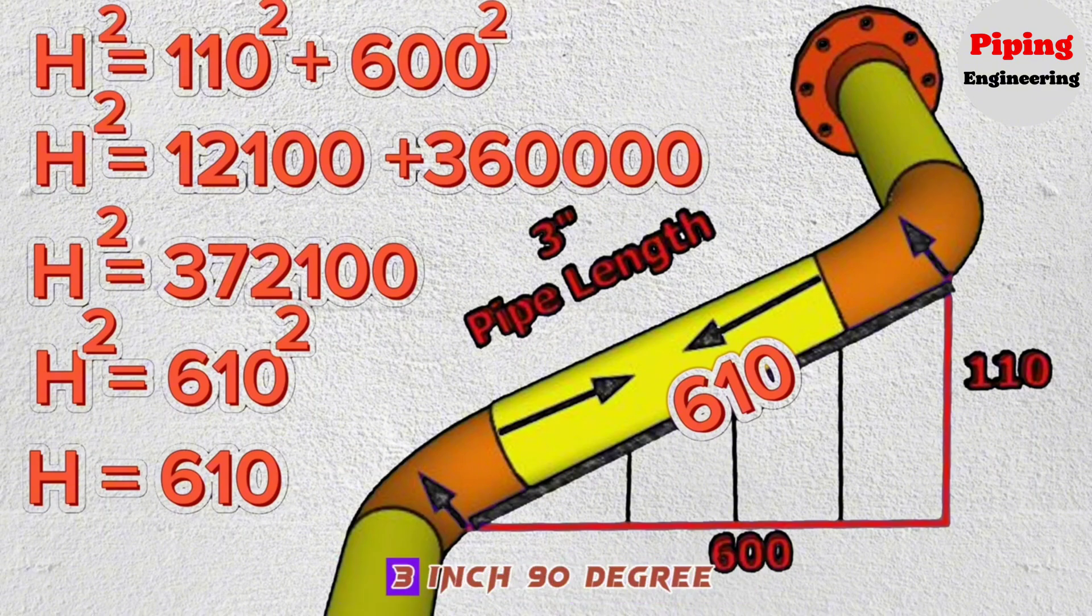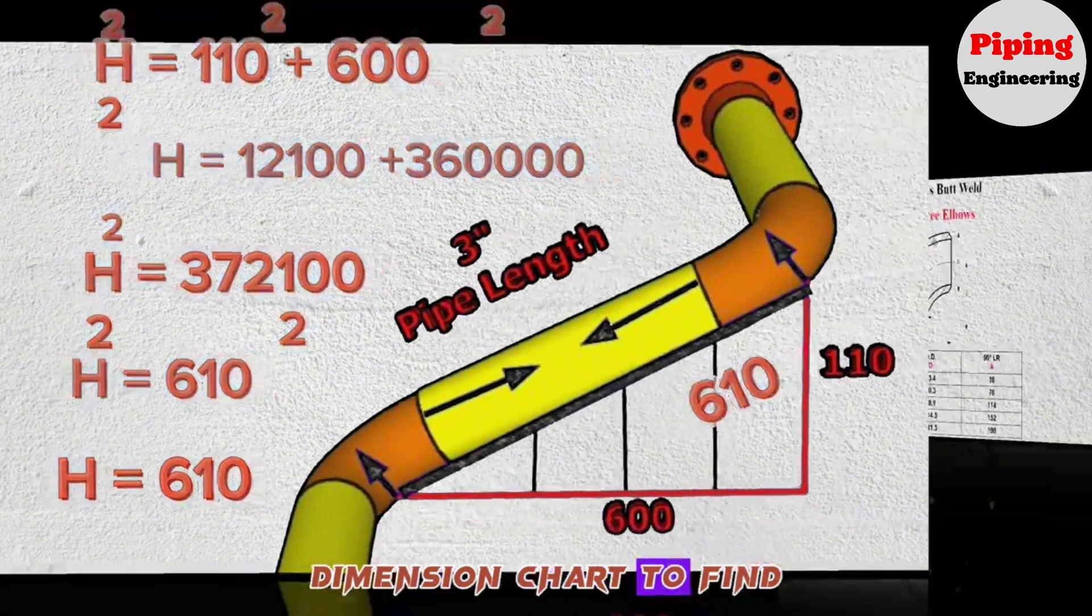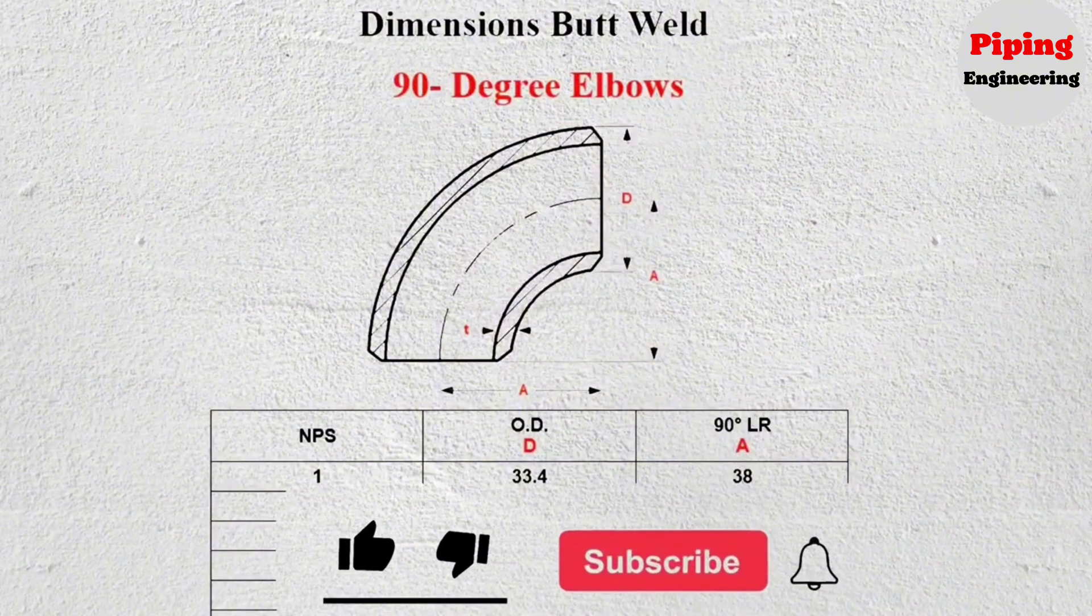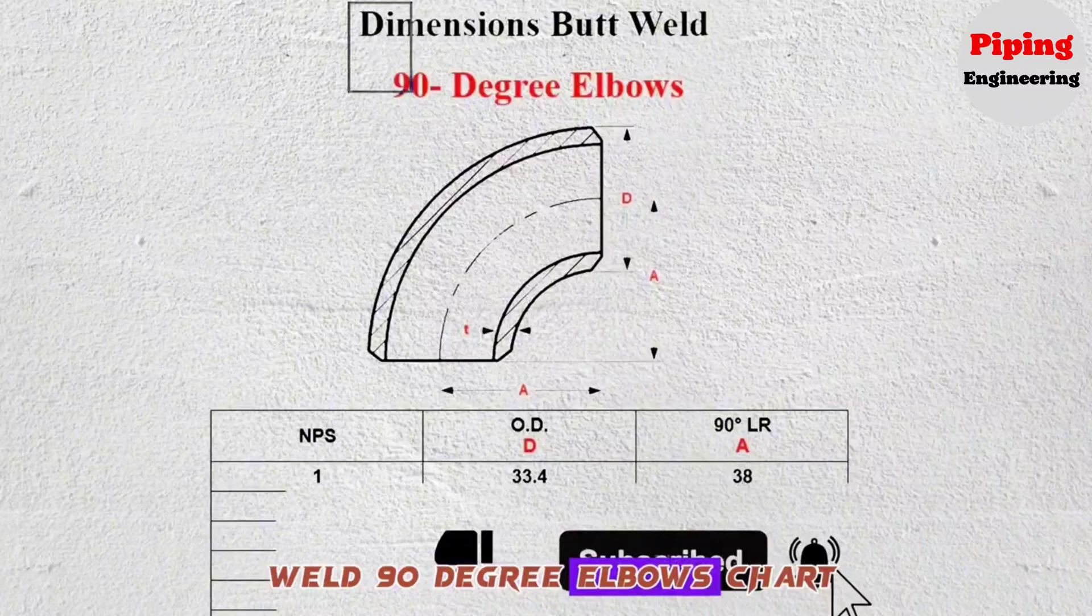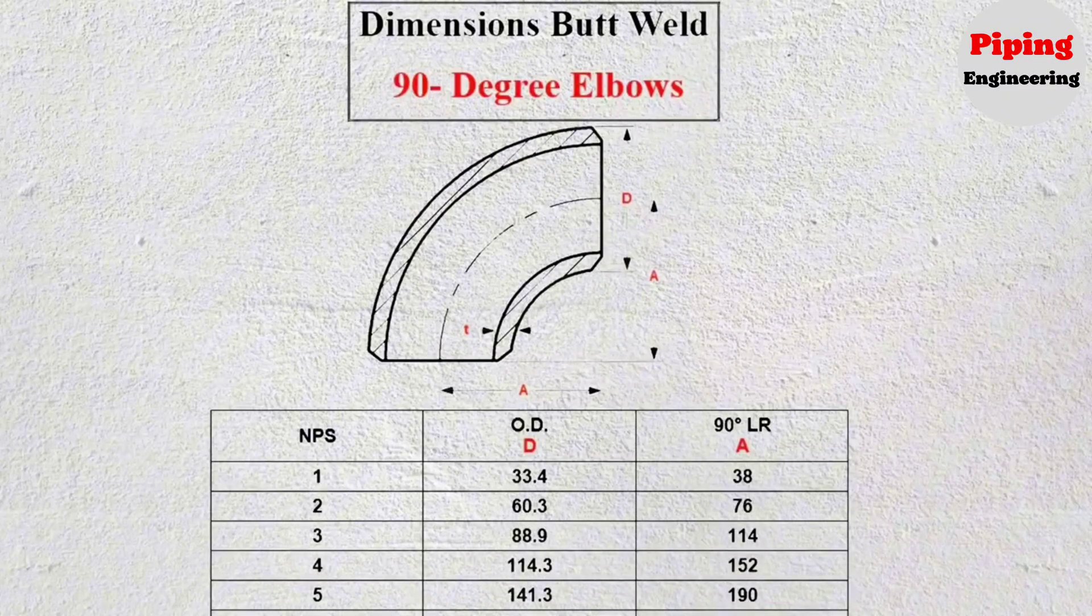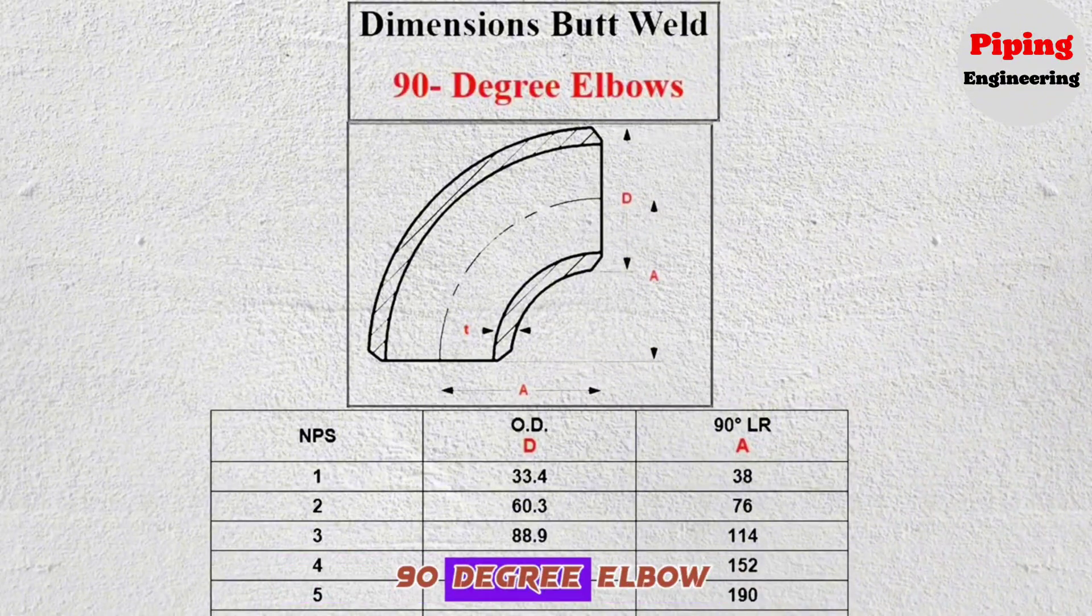The elbows here are 3-inch 90-degree butt weld elbows. We will use the 90-degree elbow dimension chart to find the elbow lengths. This is dimension butt weld 90-degree elbows chart. This is a 2-D isometric illustration of a 90-degree elbow.